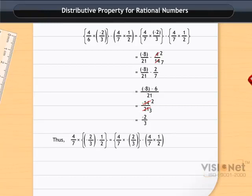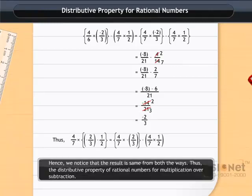On solving the expressions, we notice that the result is the same from both ways. Thus, we can say that the distributive property of rational numbers holds for multiplication over subtraction.